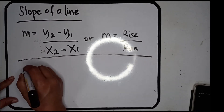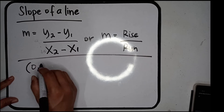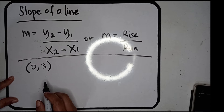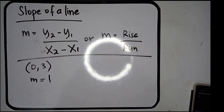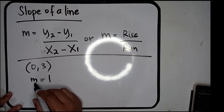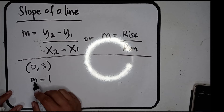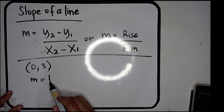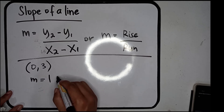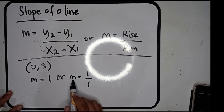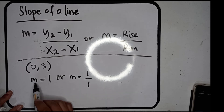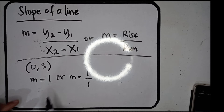Let's have a different example where the first point is given but for the second point, we are given the slope instead. When the slope is 1, this means m equals 1 over 1, because slope is rise over run. So m equals 1 over 1 is the same as m equals 1 — keep that in mind.